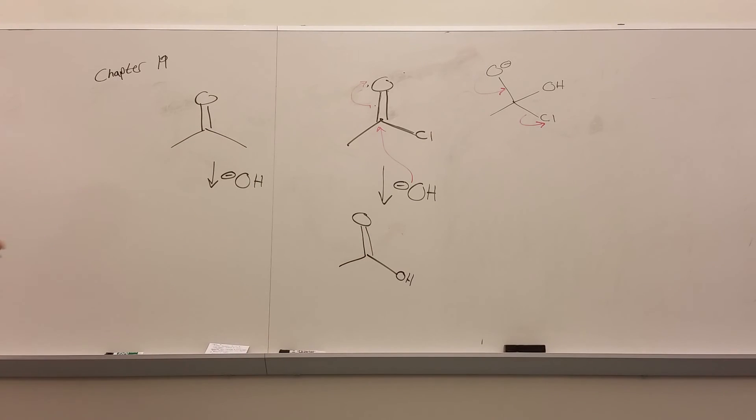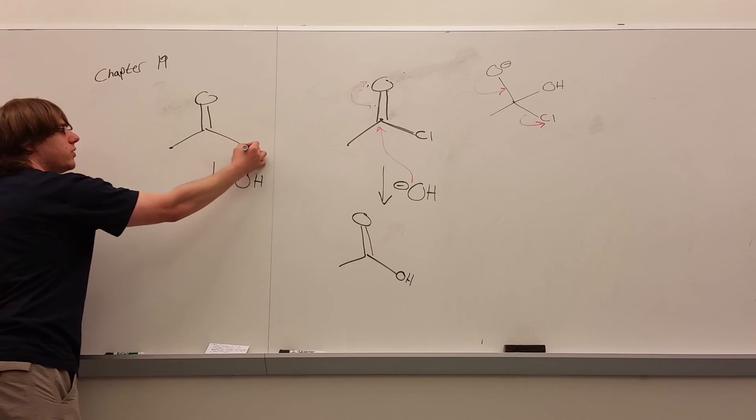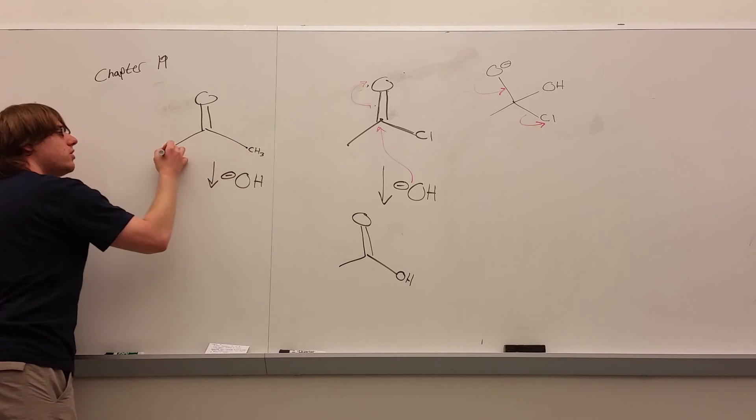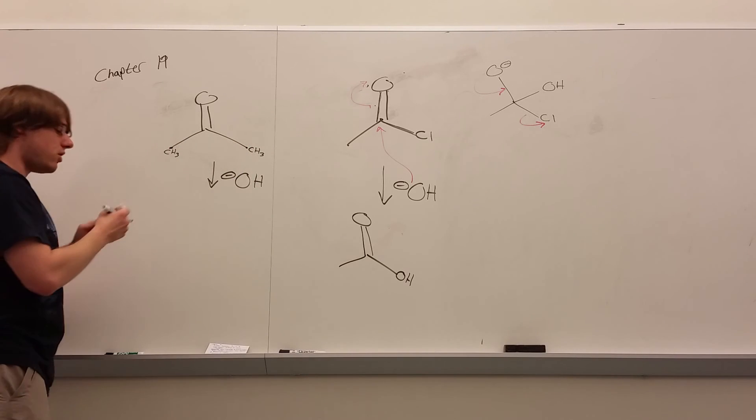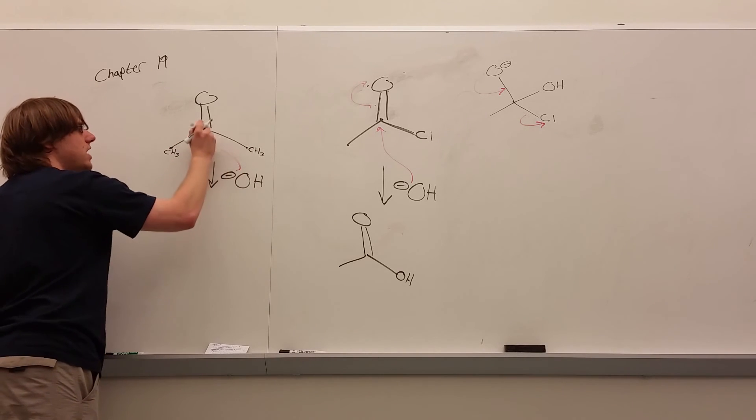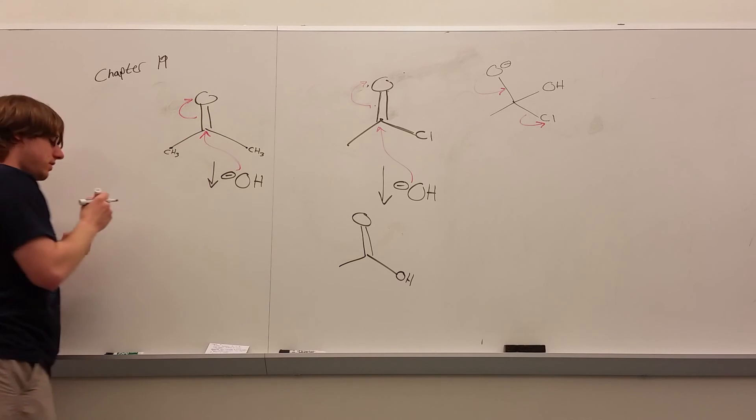On the other hand, here, this carbon only has carbon attached to it, right? Only CH3 groups. There's no good leaving group, which means if that OH- were to attack here, and this swings up, well, you'd still get that tetrahedral intermediate: O-, the OH is attached, and you have two carbons.